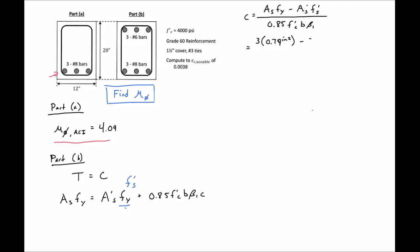Minus 3 times 0.44 square inches times our F prime S, which we don't know yet, divided by 0.85 times 4 KSI times 12 inches times beta 1, which is 0.85. But remember that 0.85 will change and will depend on our concrete strength.